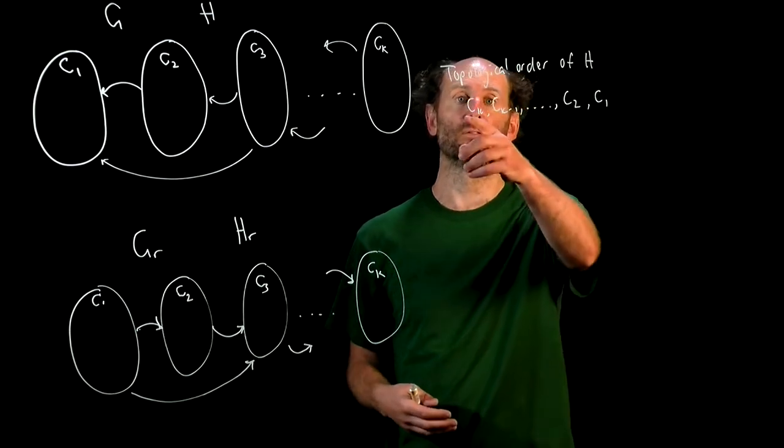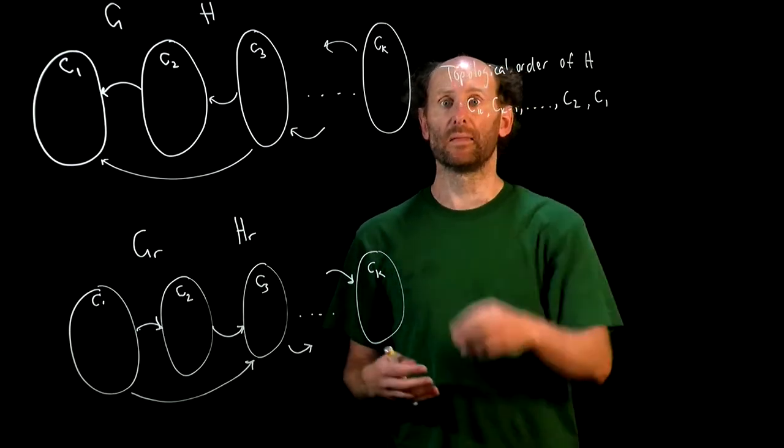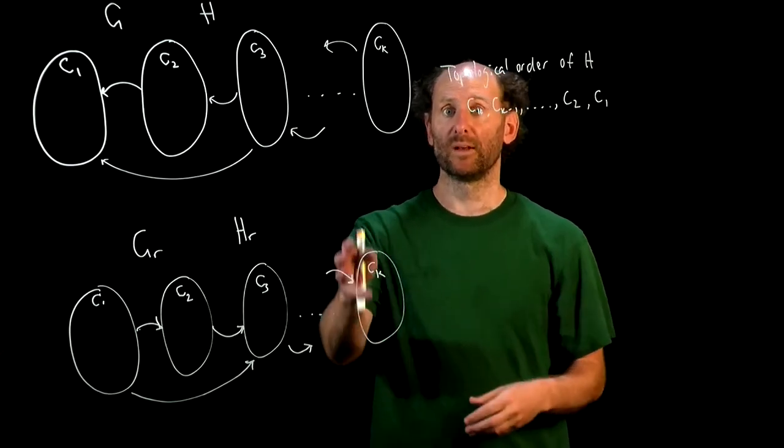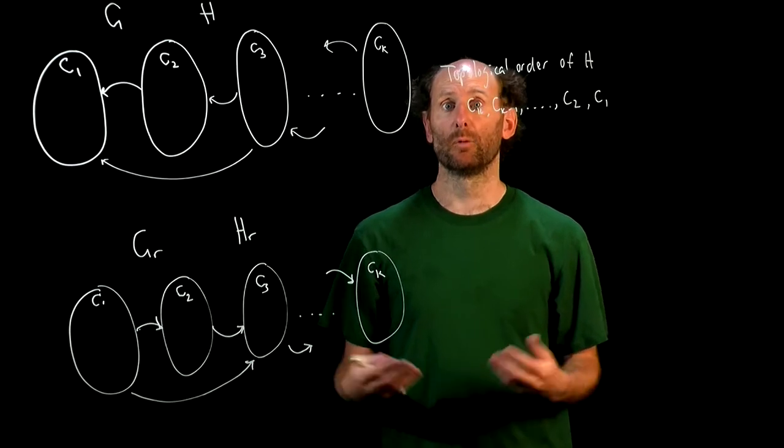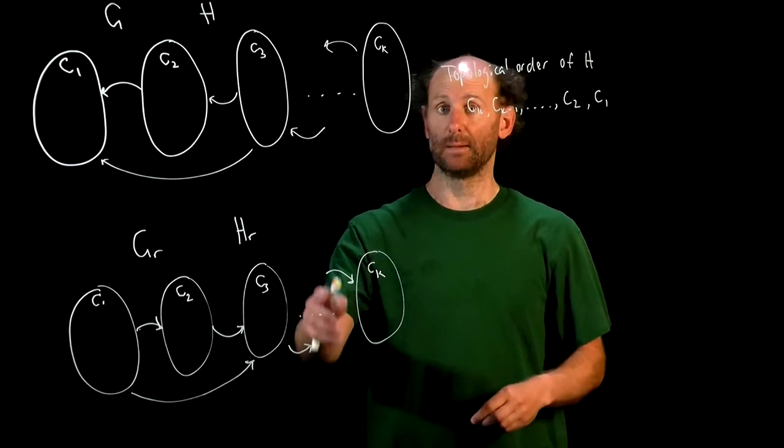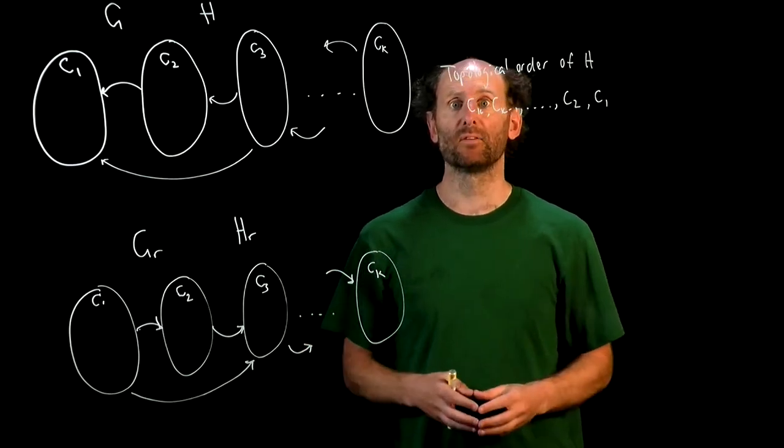Now we'll start a DFS on the reverse of G in Ck simply by picking the first node on the list we just derived. So the first node of the list will be something in Ck, we can pick that node, and once we've finished exploring Ck, we'll pick the next unvisited node on the list, and that'll be something in Ck minus 1, and so on.